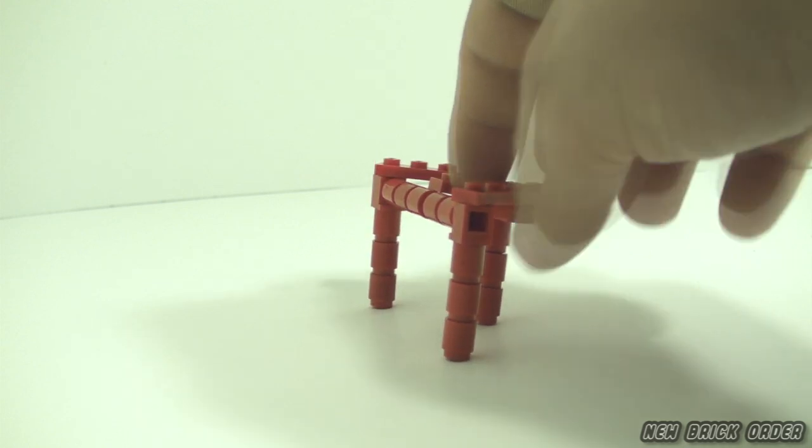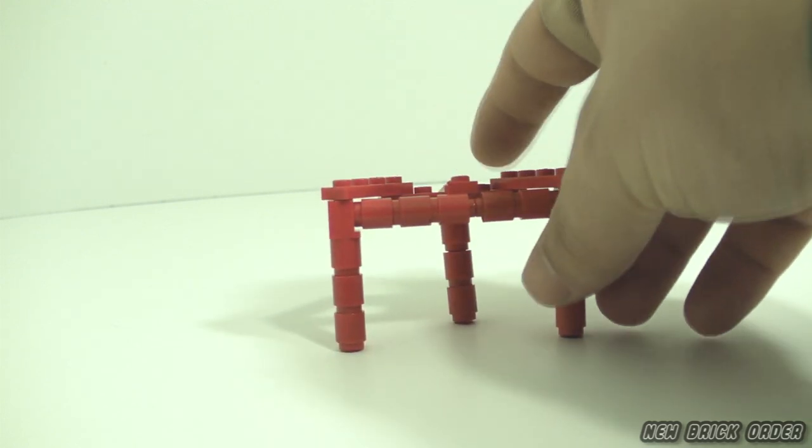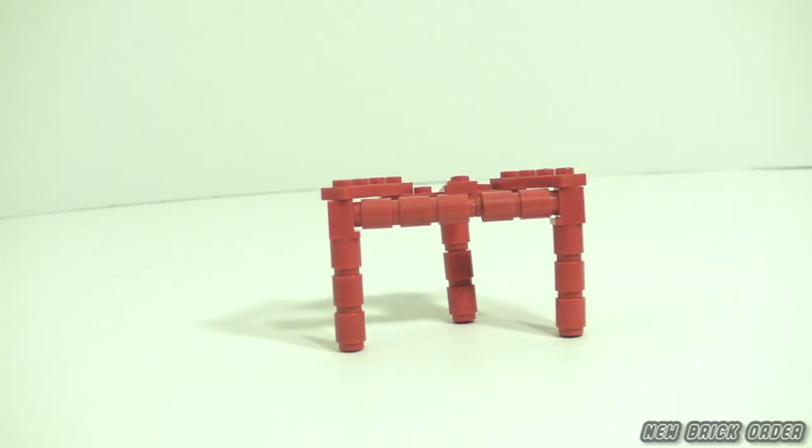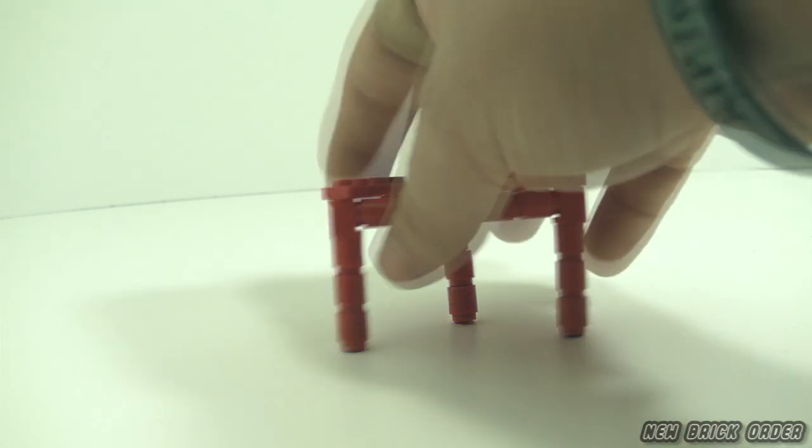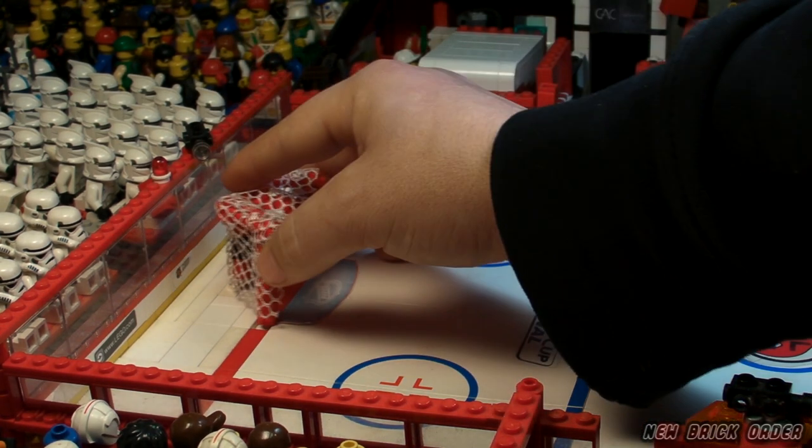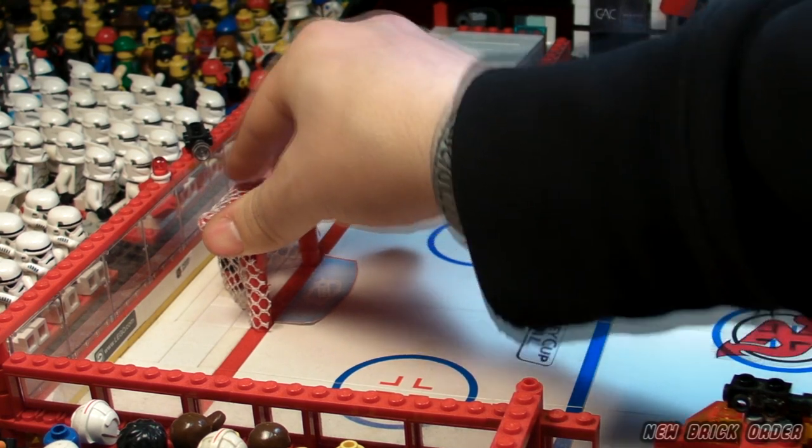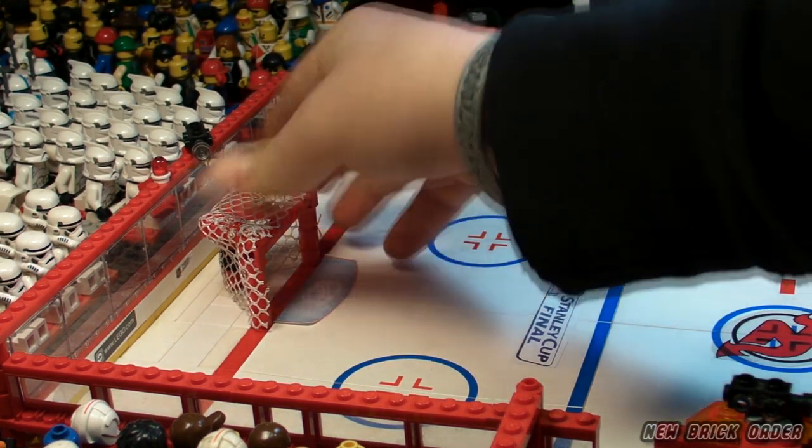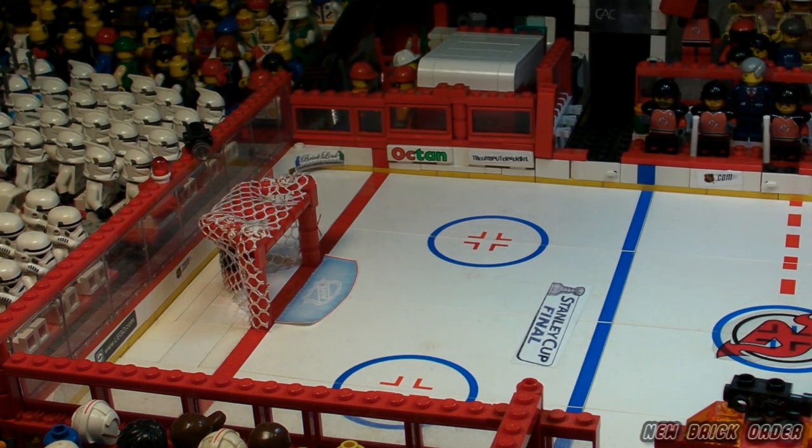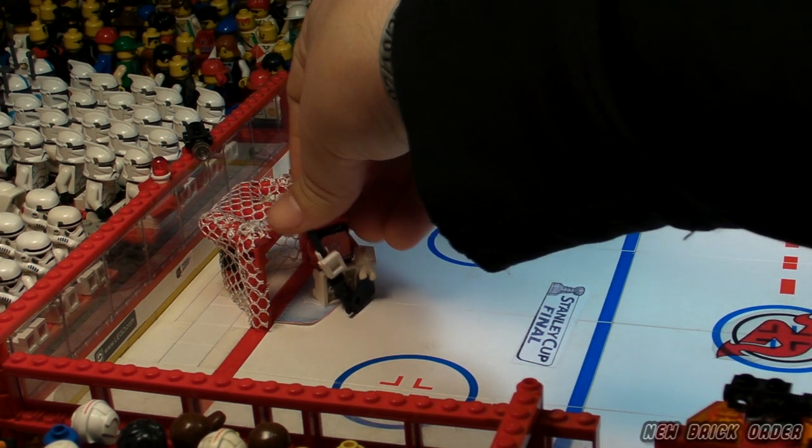Once you attach your own net, or if you don't want to use a net, you can place your goal in your LEGO stadium. You'll want to add a stud, or as we did, a 1x2 plate with one stud on top underneath the back post. This will make the net sit nicer in your stadium and level it out.